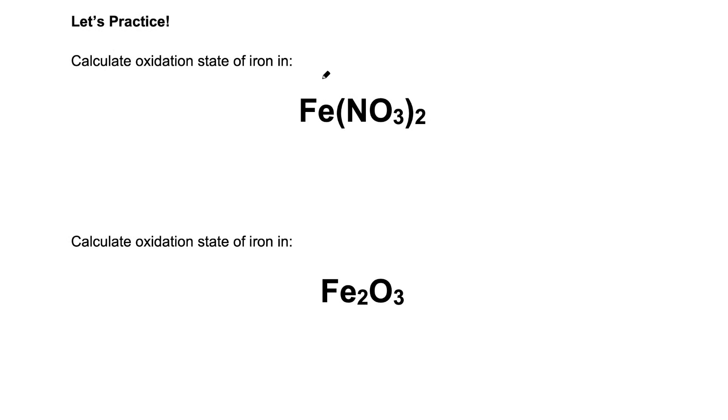We go through the first one. This is iron two nitrate. The iron two nitrate is made up of the Fe2 plus and NO3 minus ions. If they ask you to calculate the oxidation state of iron, we will apply rule number two. The rule states that the oxidation state of a simple ion is the charge of the ion. Therefore, the oxidation state of iron in iron two nitrate is plus two.